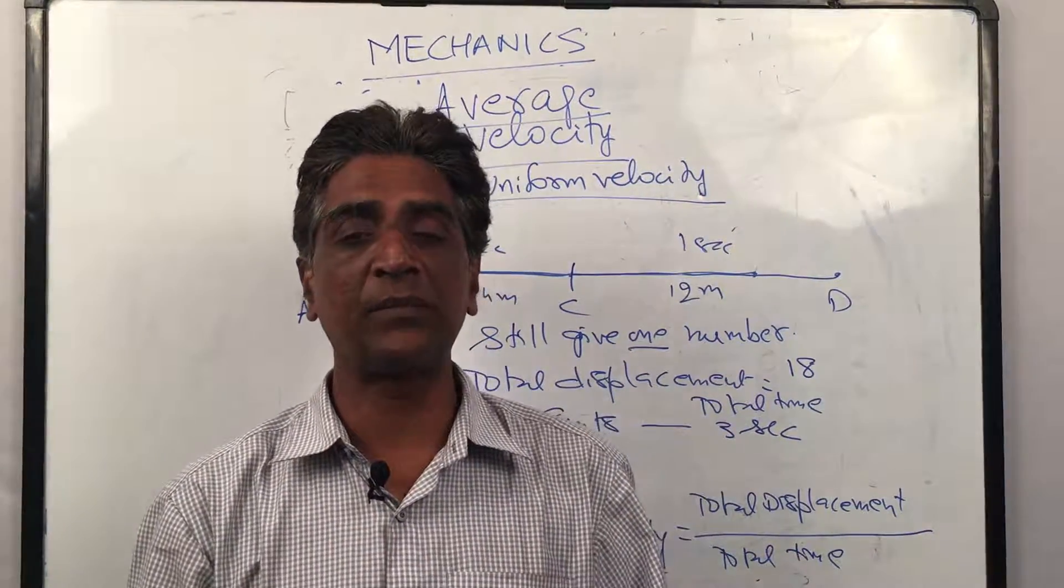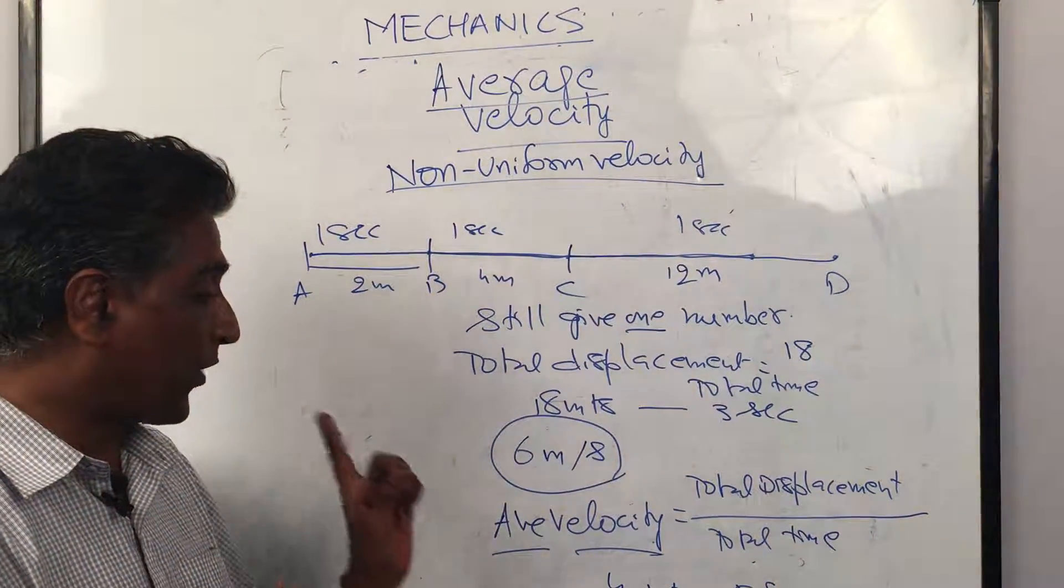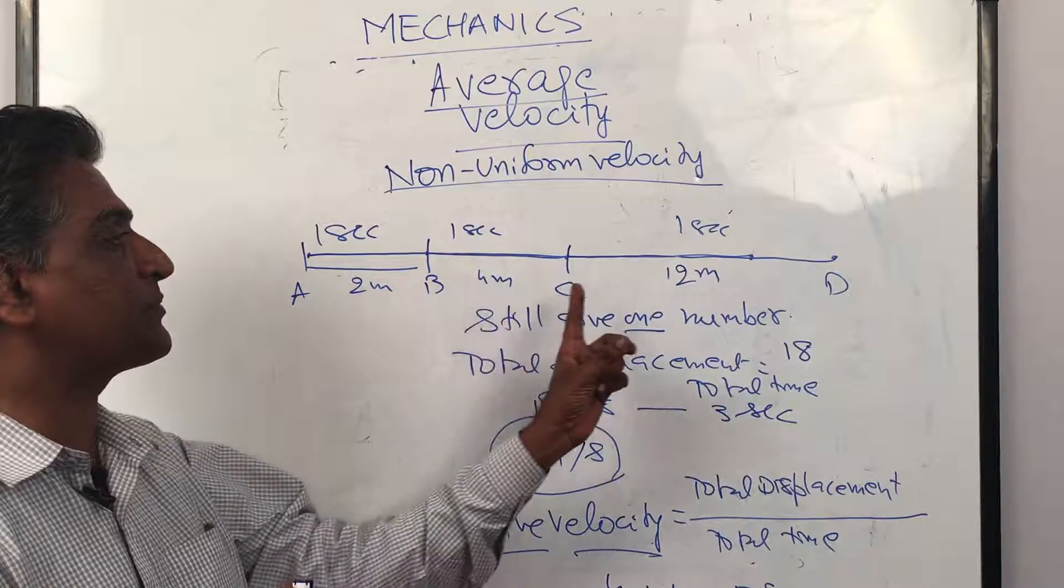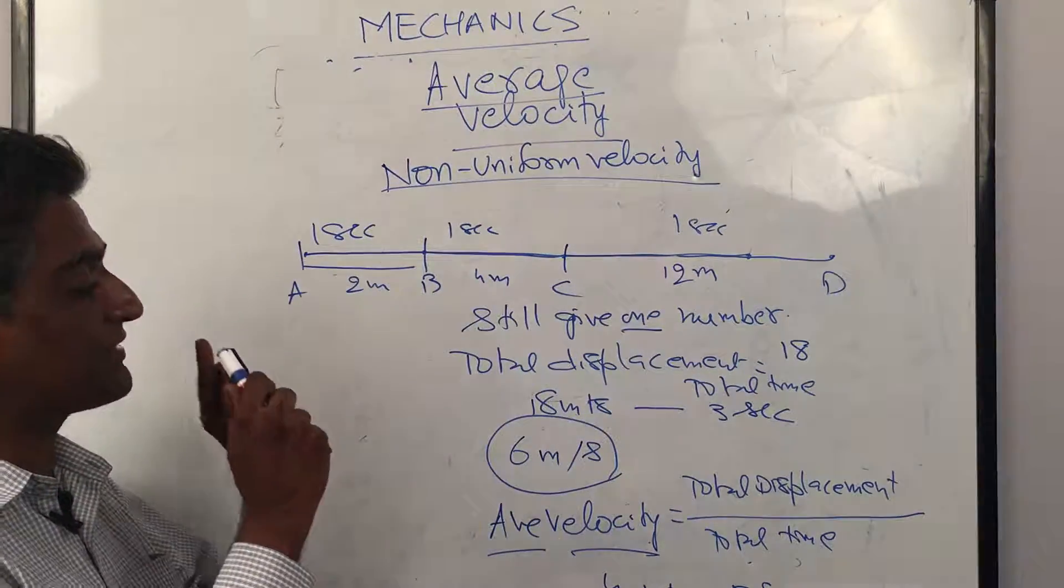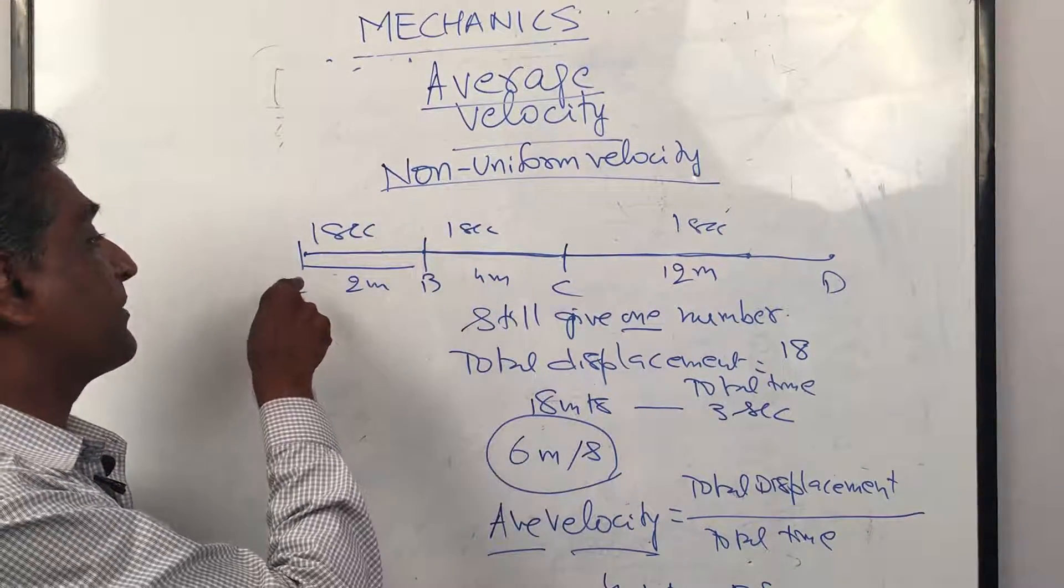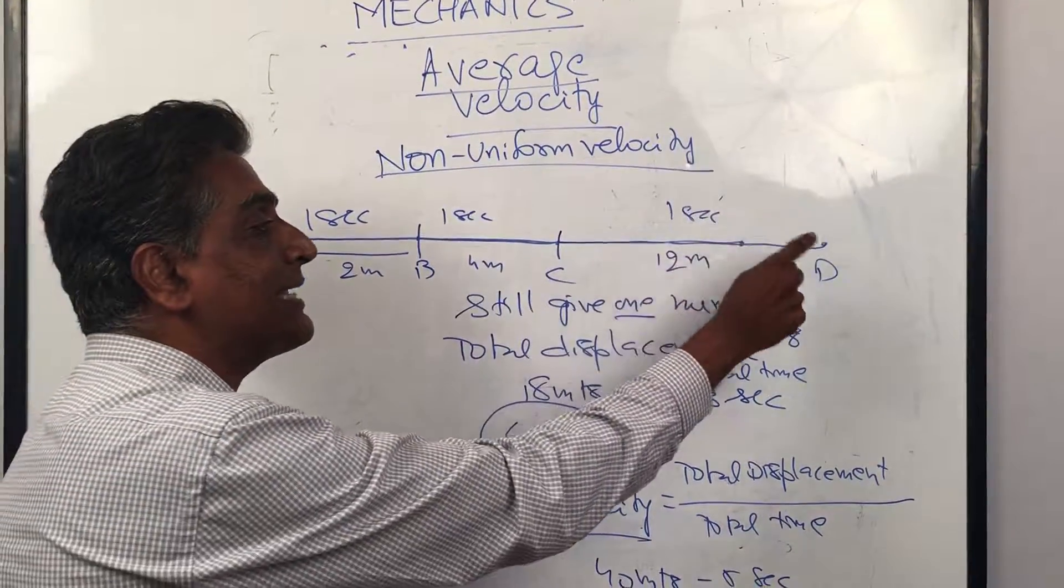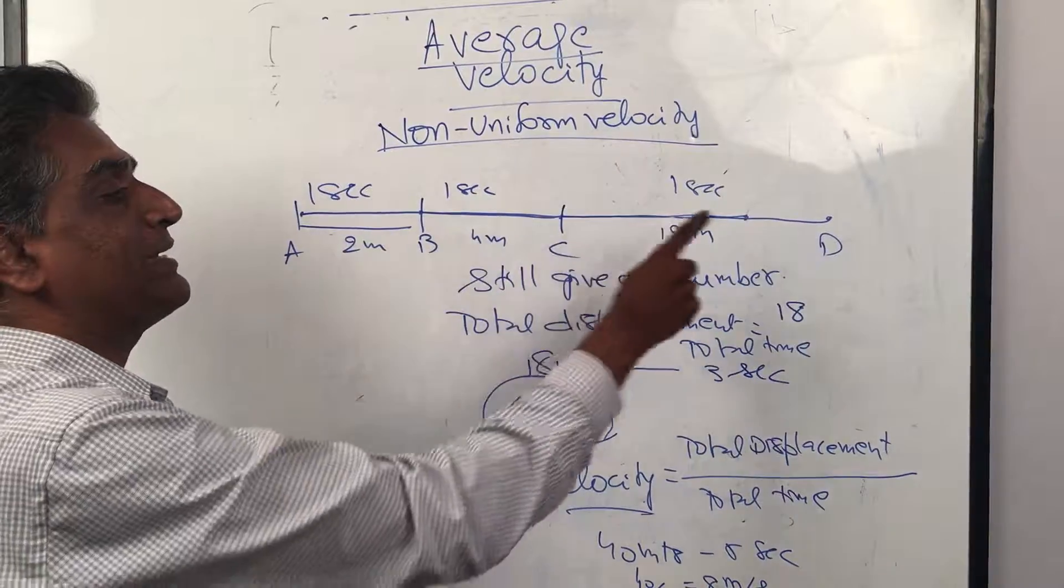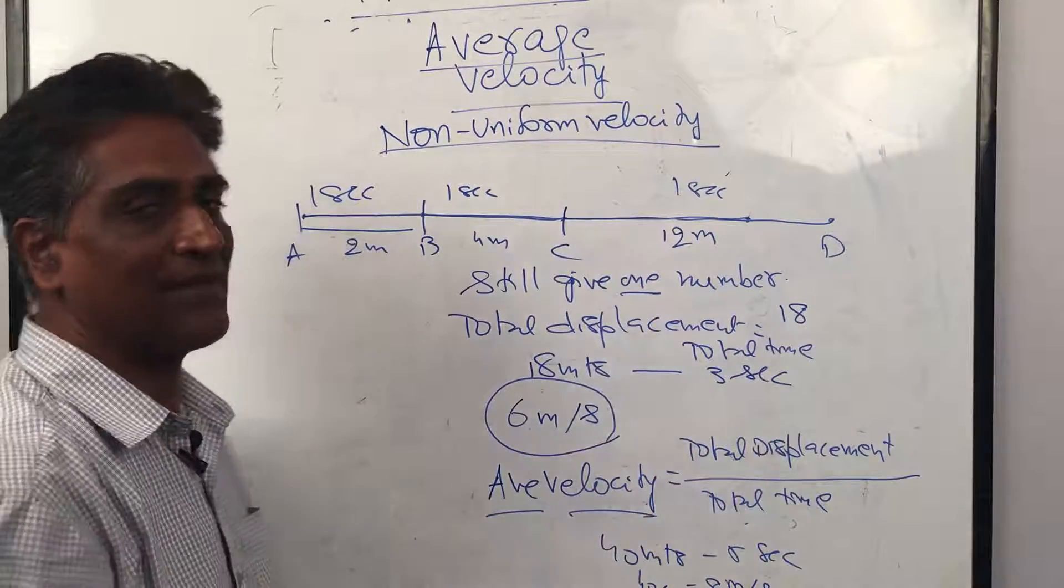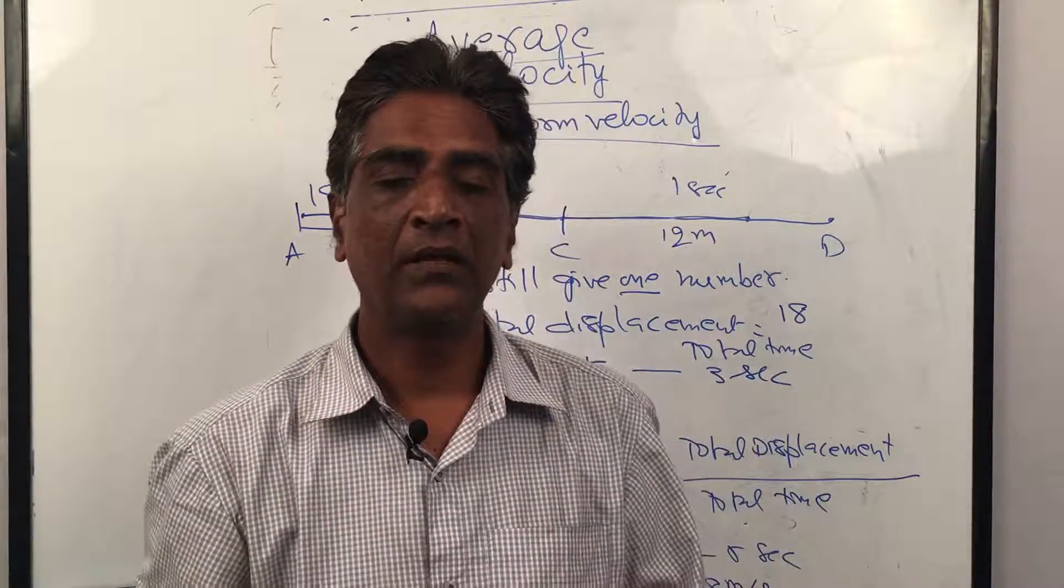So definitely we can find the average of a velocity. You must understand that the body is not actually going at 6 meters per second here, but if it had gone 6 meters per second starting from the same time, it would have ended at the same time. That is average velocity.